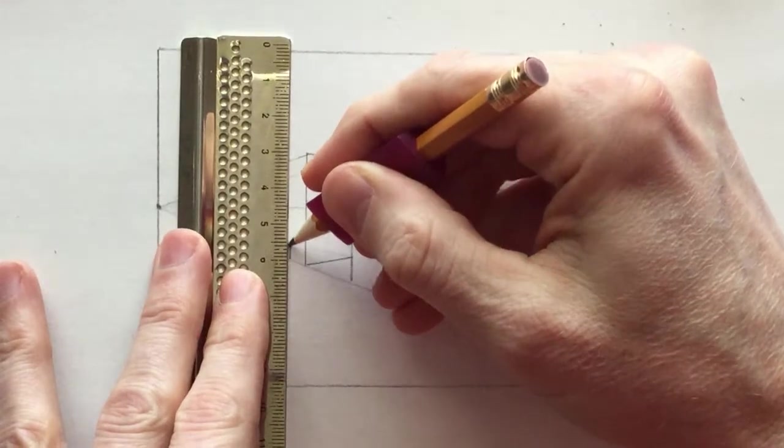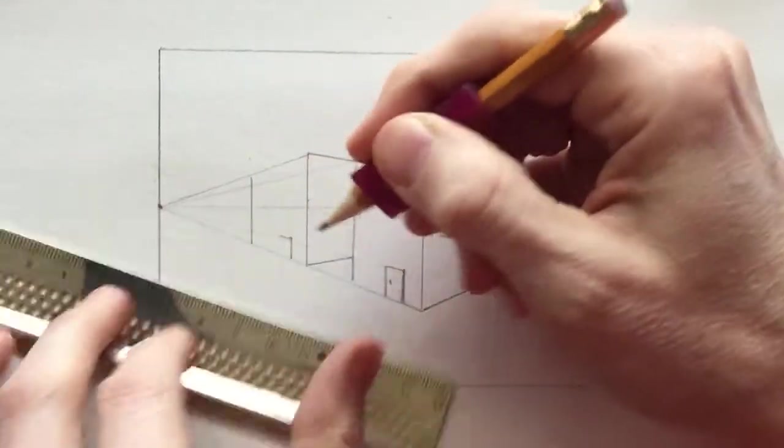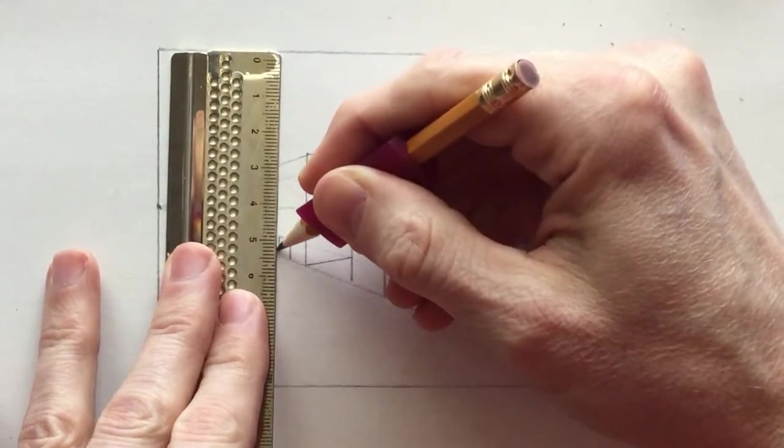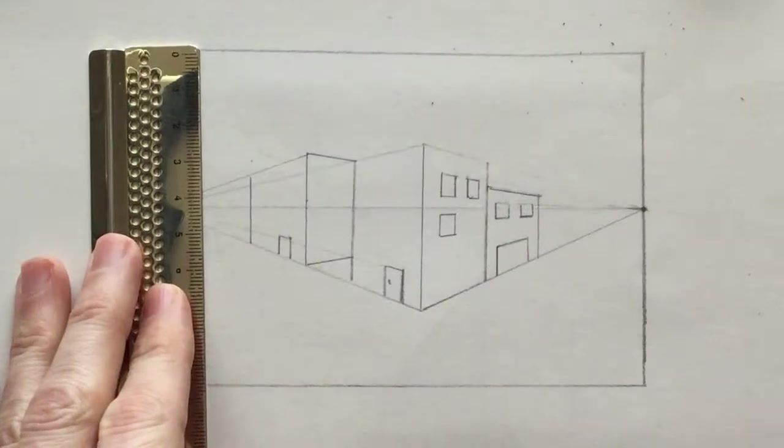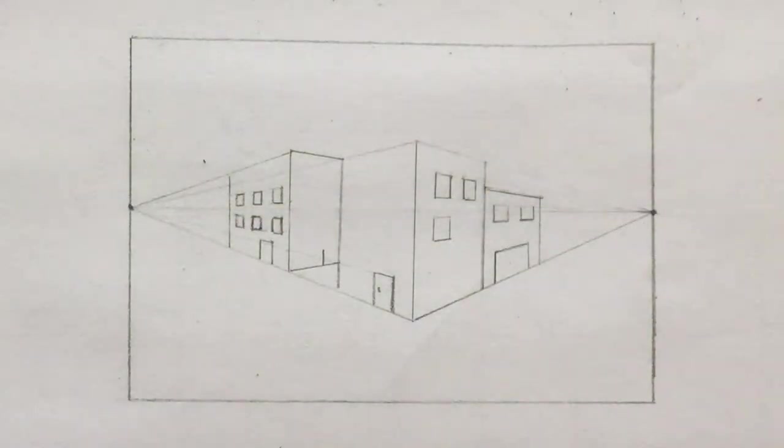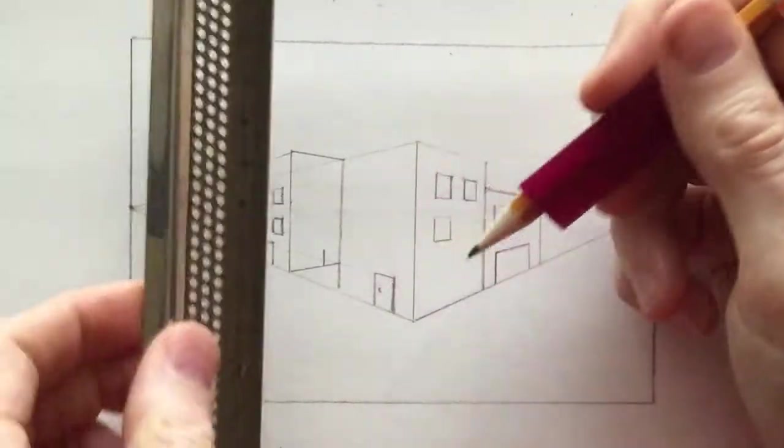You can do some doors on the side as well. I'll take a moment to add some more windows and doors to this building. All the windows line up both vertically and horizontally, and you can see that you've got that 3D effect there in the building.